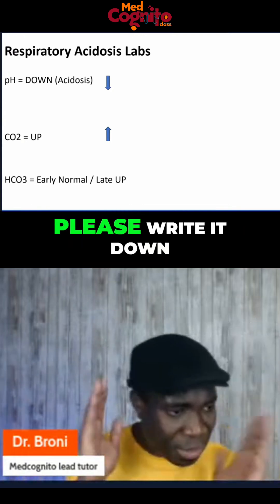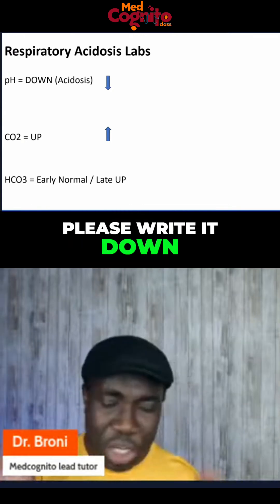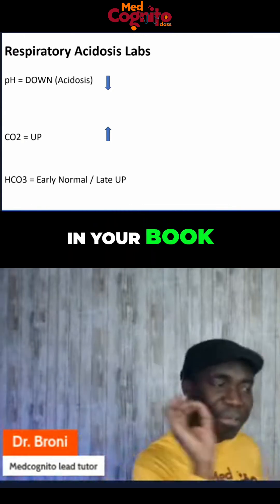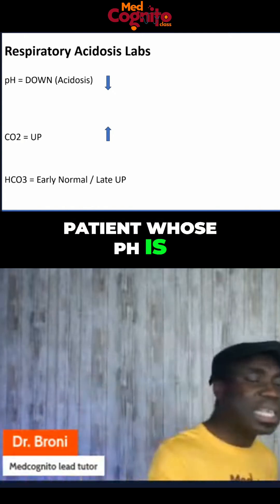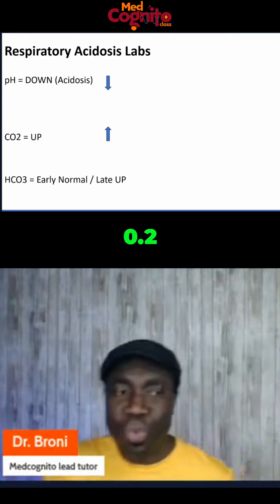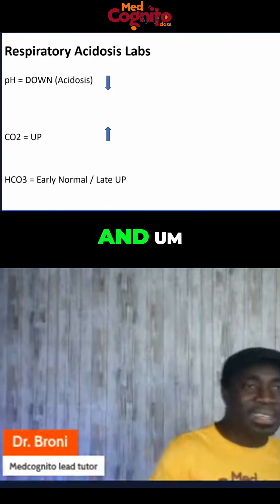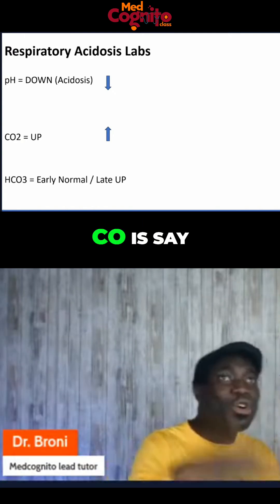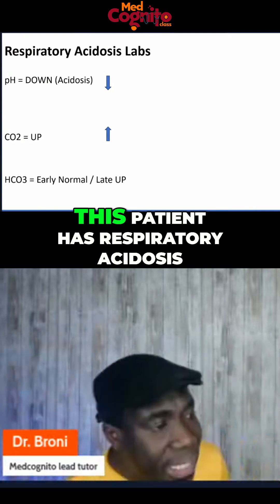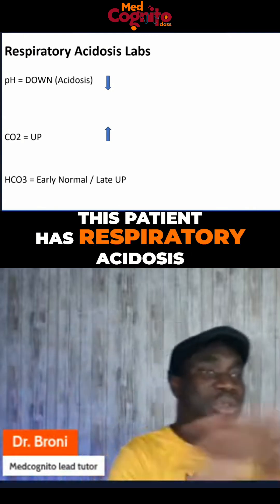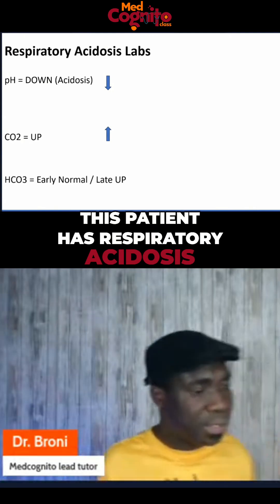Doctors, please write it down in your book. If I have a patient whose pH is, say, 7.21 and CO2 is, say, 60, this patient has respiratory acidosis.